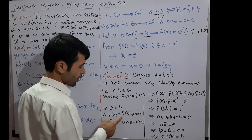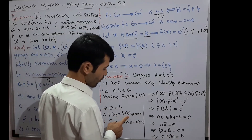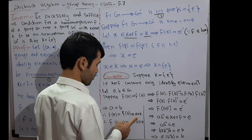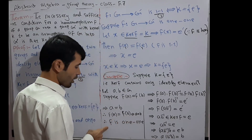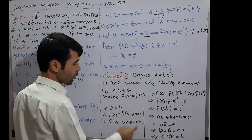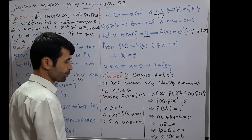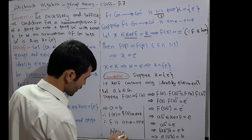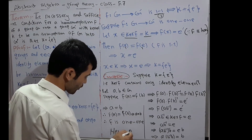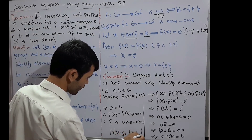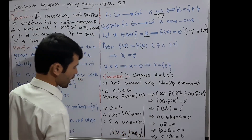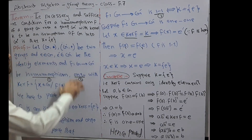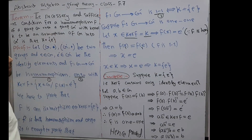Therefore, F(A) = F(B) implies A = B, so F is one-one. Hence F is an isomorphism. This completes the proof of the theorem.